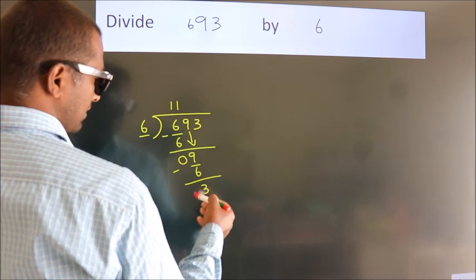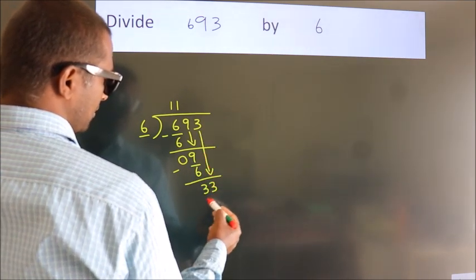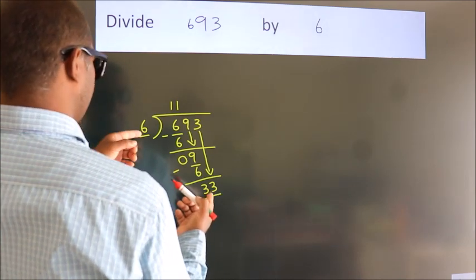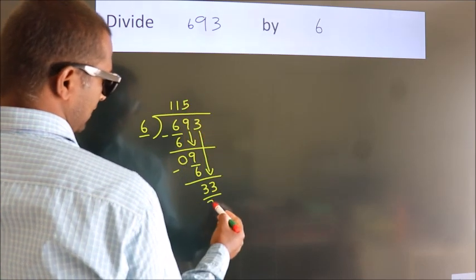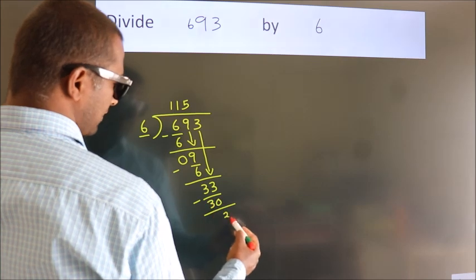After this, bring down the beside number. So 3 down, giving us 33. A number close to 33 in 6 table is 6 times 5, 30. Now we subtract. We get 3.